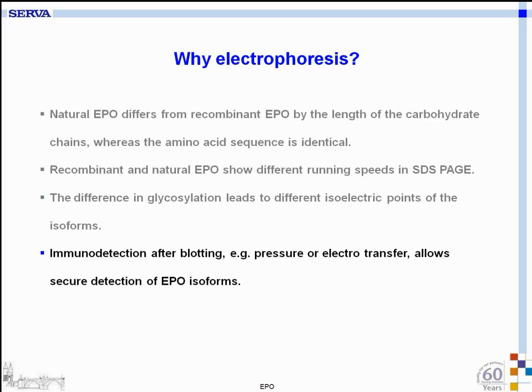Immunodetection after blotting — for instance, pressure or electrotransfer — allows secure detection of EPO isoforms.